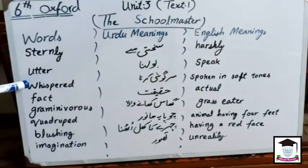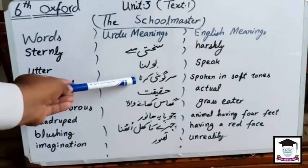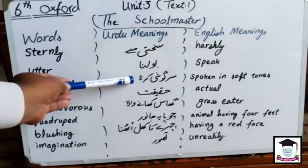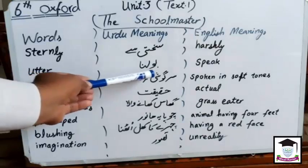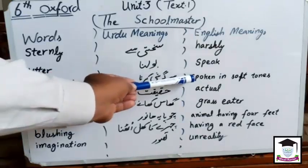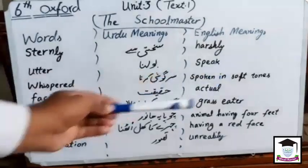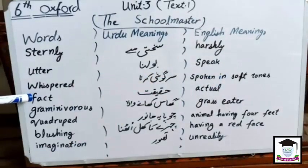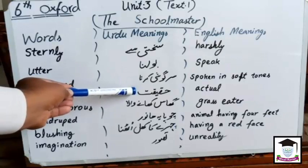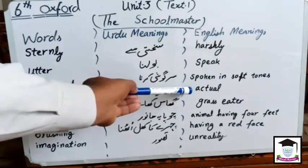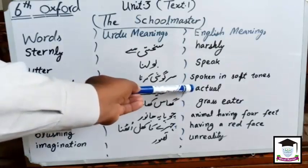Next word is whispered. Urdu meaning: sargoshi karna. English meaning: spoken in soft tones. Next word is fact. Urdu meaning: akikat. English meaning: actual.